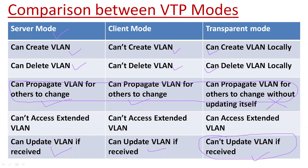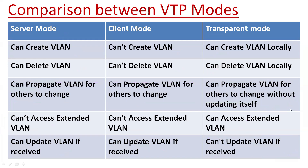Server mode and client mode switches will update their database, but the switch in transparent mode will not update the database. Regarding extended VLANs: server mode cannot access extended VLANs, client mode also cannot access extended VLANs, but transparent mode can access extended VLAN information — meaning VLANs 1006 to 4095 can be created in transparent mode.